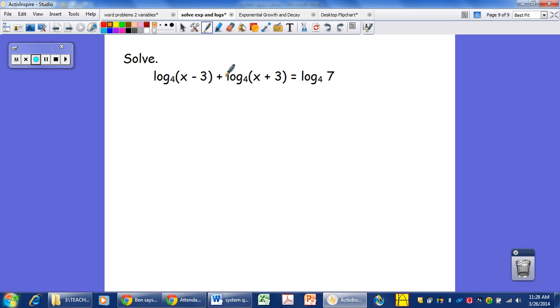Okay, one last time. In this case, addition of logs becomes multiplication of their values. So this will be the log base 4 of x minus 3 times x plus 3. So we are multiplying these two things together. And that equals the log base 4 of 7.